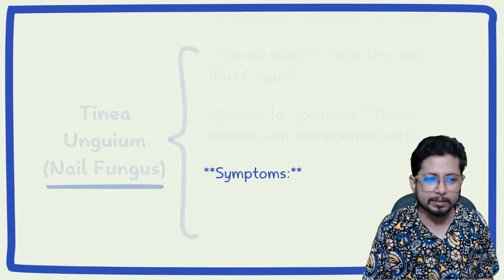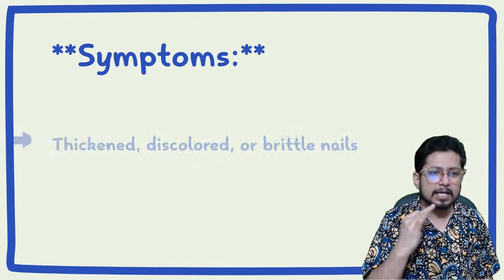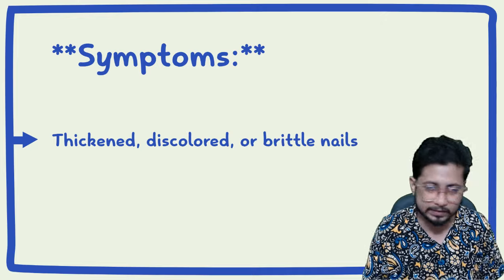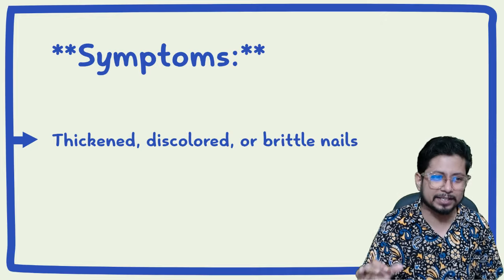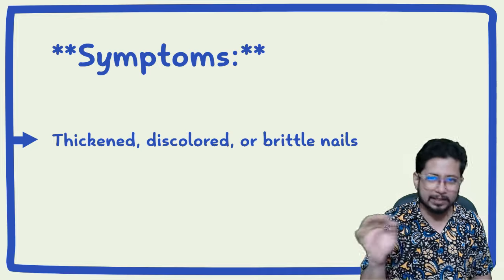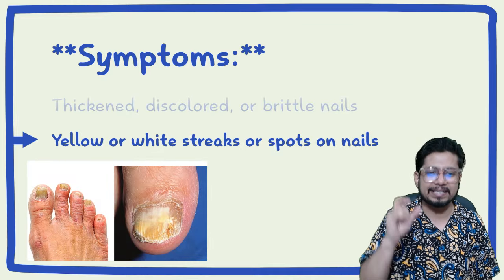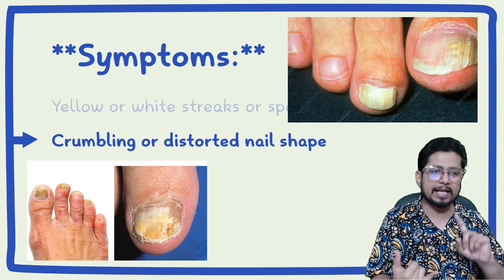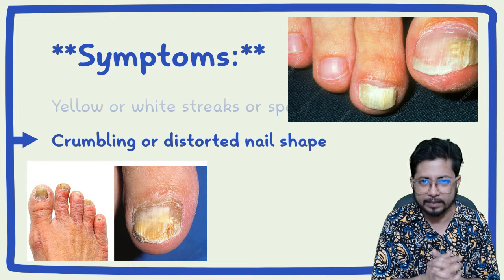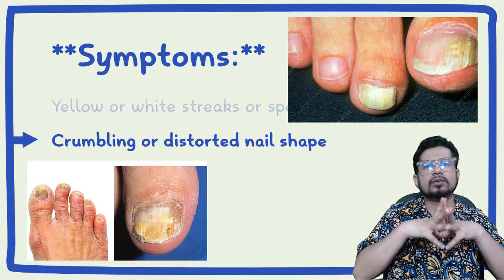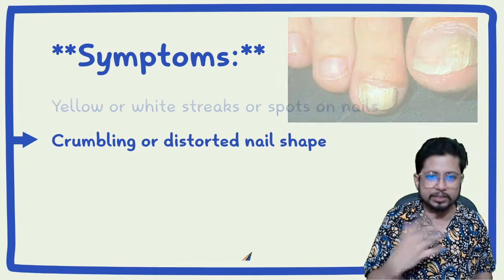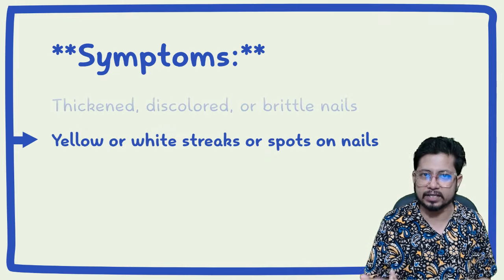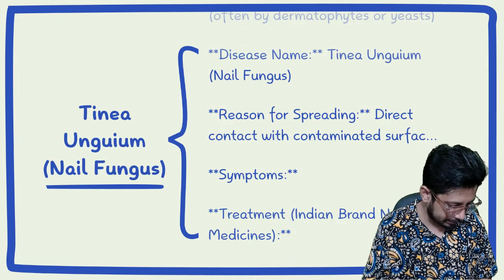The symptoms of nail fungus include thickened, discolored, and brittle nails — as clearly illustrated in the picture. Yellow or white streaks or spots are found on the top of the nails, and crumbling or distorted nail shapes can be visible. The overall structure of the nail will be crumbly or distorted, with yellow or white patches and thickening. These are the major symptoms and they are related to the nail only.